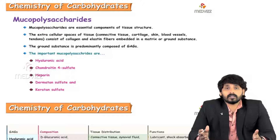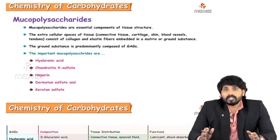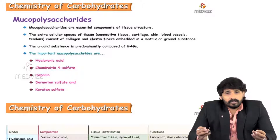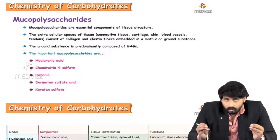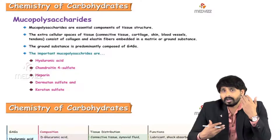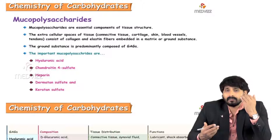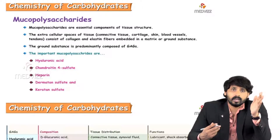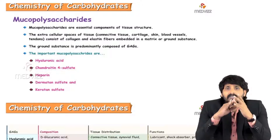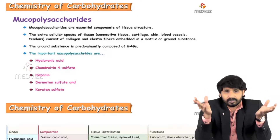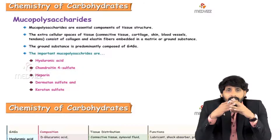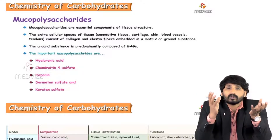Mucopolysaccharides are essential components of tissue structure — wherever tissues are mucus in nature. All those tissue structures are made up of mucopolysaccharides or heteropolysaccharides, such as extracellular spaces of tissues, connective tissue, cartilage of bone, skin, blood vessels, and tendons. All are made up of mucopolysaccharides, especially where tendons and cartilages are present. Collagen and elastin fibers are embedded in and form a ground substance that is purely made of glycosaminoglycans or mucopolysaccharides.